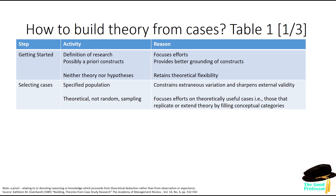When you're selecting the cases, you're going to have to specify a population where you're going to get your cases from. There's going to be extraneous variation within that, and that will provide greater external validity. So you are trying to choose a specific subset of cases, but there will be variation in that, and that will help make the generalization more valid.